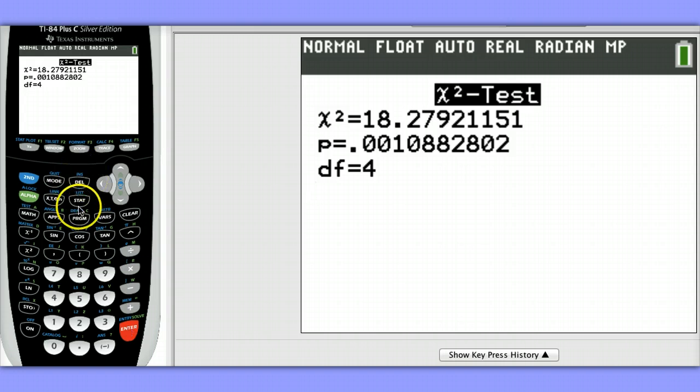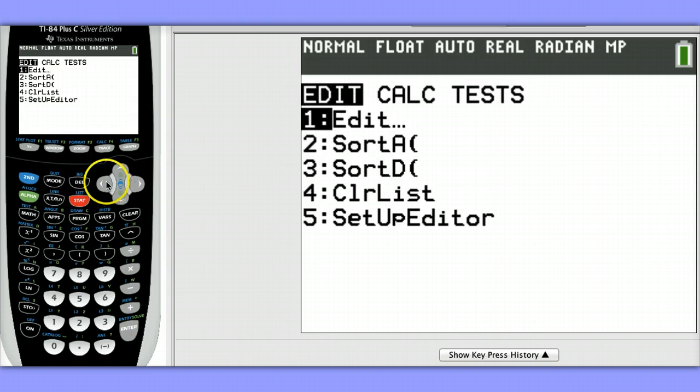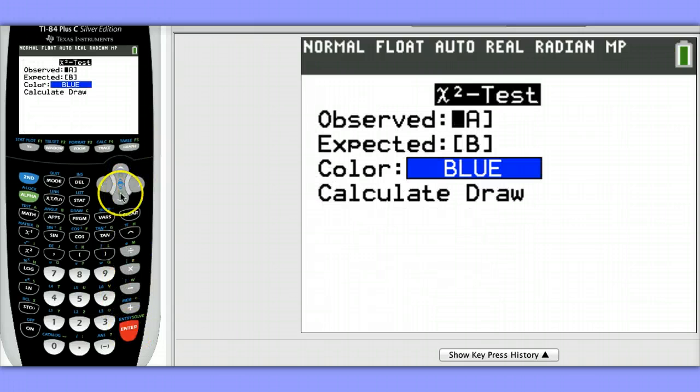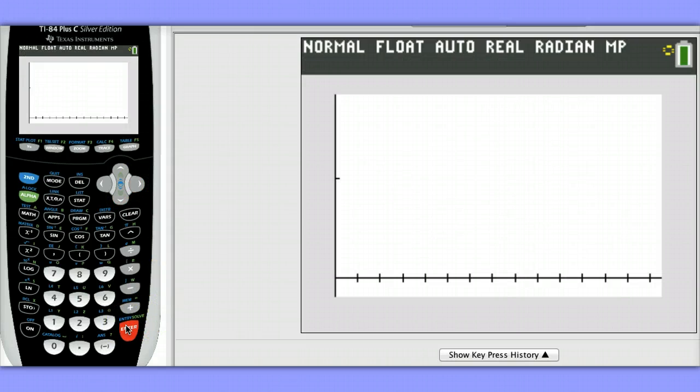We also have the option of drawing the chi-square distribution. So let's go back to chi-square test again. And instead of choosing calculate, let's choose draw.